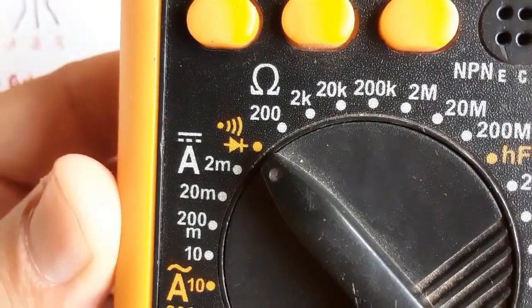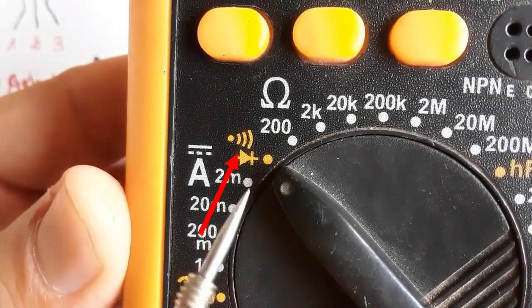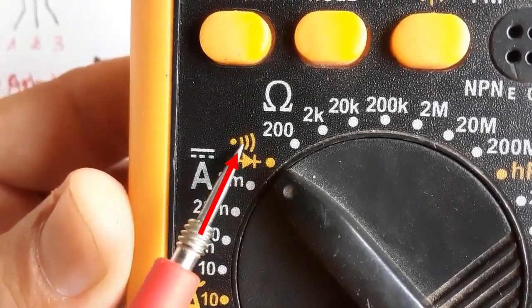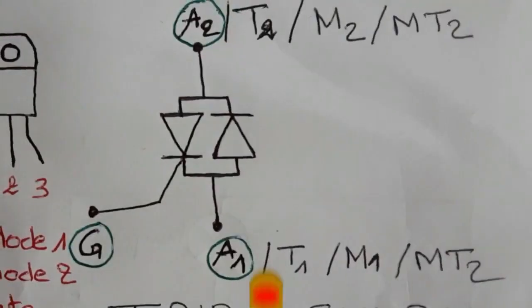Okay. So, we're going to, of course, select the continuity option in the multimeter. As you can see.